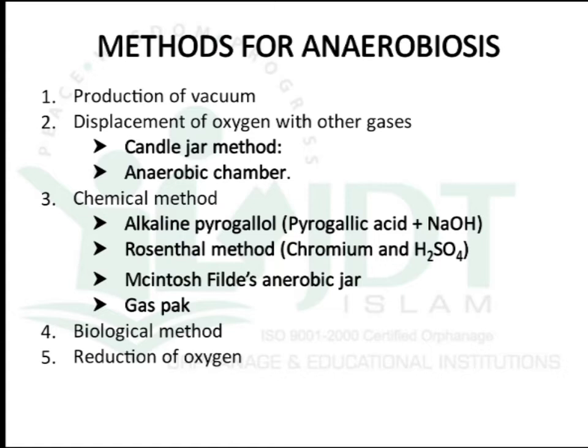There are five methods. The first one is production of vacuum. The second is displacement of oxygen with other gases, which includes the candle jar method and anaerobic chamber. The third method is the chemical method, using alkaline pyrogallol with pyrogallic acid and sodium hydroxide, or the Rose-Sandar method using chromium and sulfuric acid, or McIntosh field anaerobic jar and gas pack. The fourth method is biological method, and the fifth is reduction of oxygen.